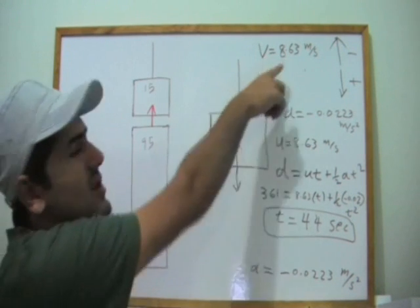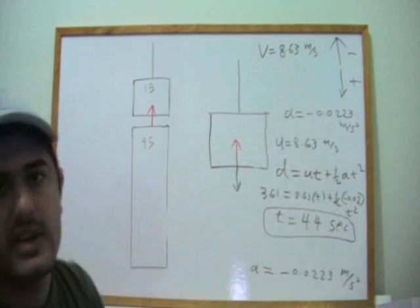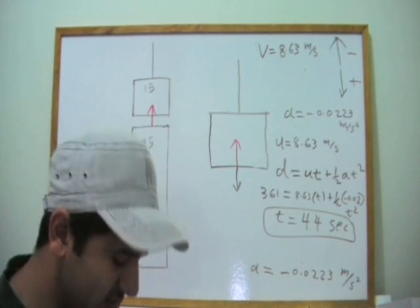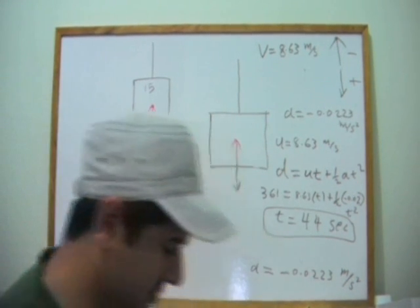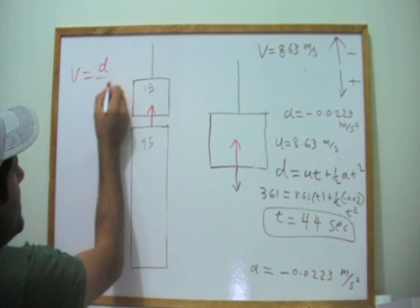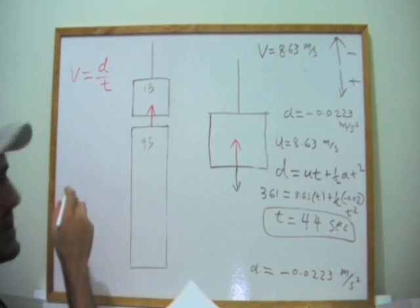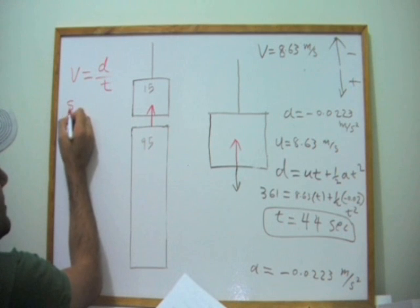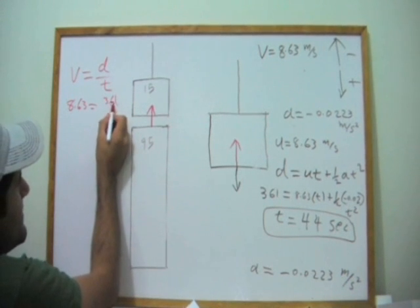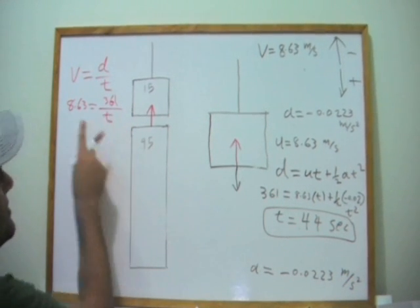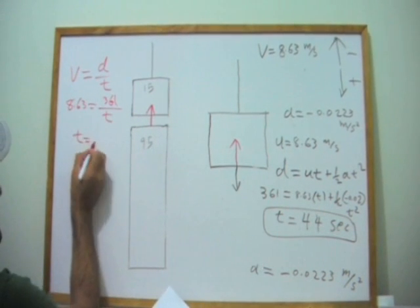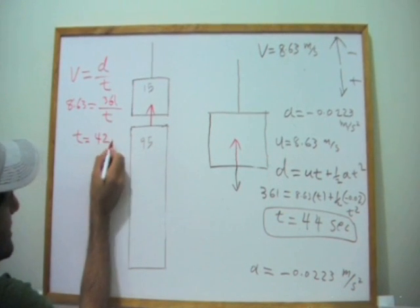So whatever the speed that was, which is 8.63, it should stay the same throughout the whole journey. And if we do that calculation, if we do velocity equals distance over time, this is a very simple equation, if we say the speed or the velocity was 8.63 and the distance was 361, so how much time should it take for this block to reach the floor, it will be 42 seconds.